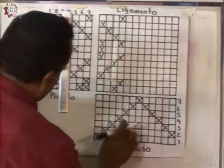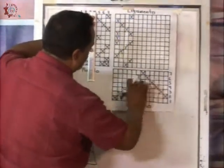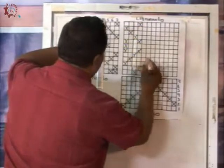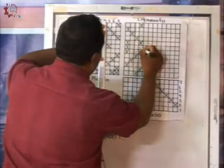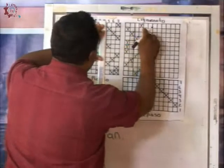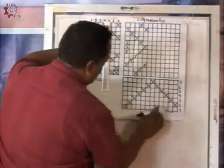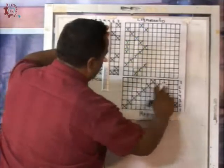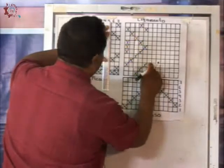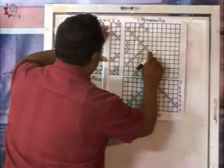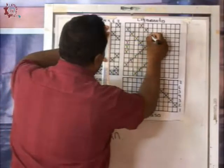Después voy con el cinco. Aquí me indica el cinco — este hilo corresponde al cinco: dejo dos, tomo uno, dejo tres, tomo uno, dejo tres y tomo uno. Después voy con el seis, que corresponde a este hilo: tomo uno, dejo dos, tomo uno, dejo cinco, y tomo uno.